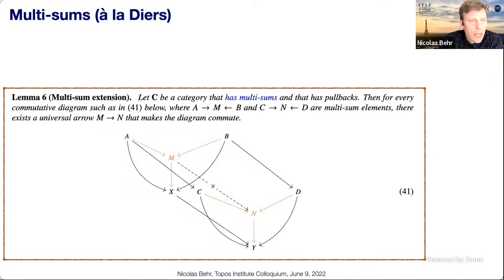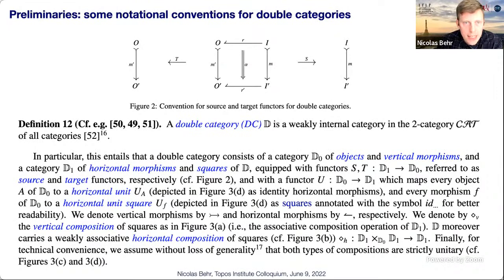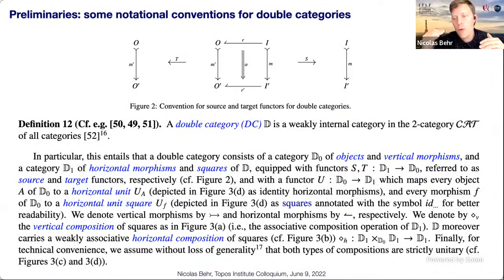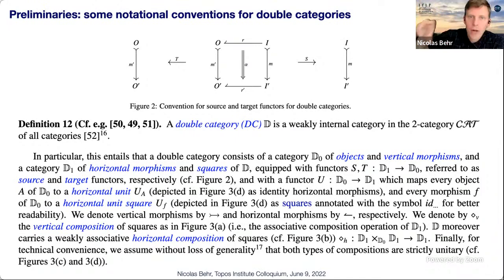I won't introduce double categories in detail to this community, but just a few notation conventions: our morphisms go from right to left; the harpoon arrows are the weakly associative direction, which are the horizontal morphisms; vertical morphisms strictly compose and are usually from a particular stable system of monics, so they get a special symbol. Source and target functors read out the vertical source and target of squares and are genuine functors with respect to strict composition.